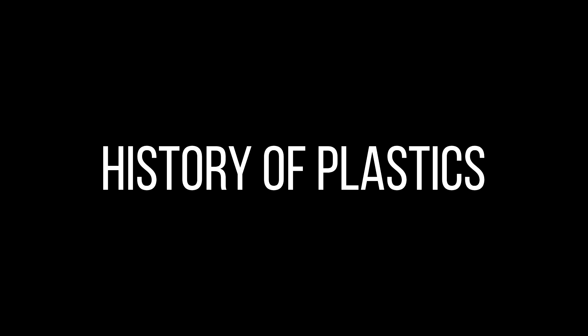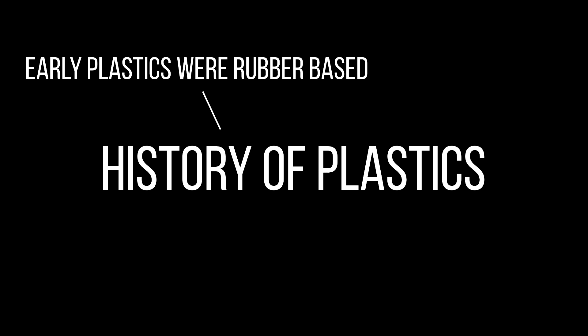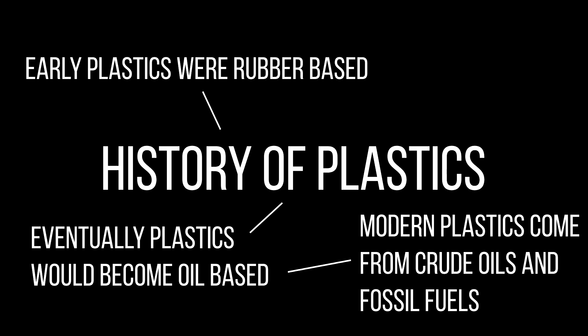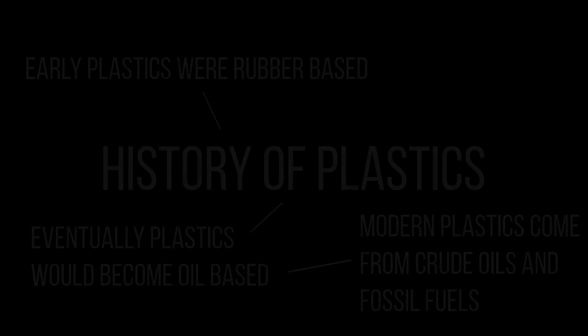Early plastics, such as polyvinyl chloride, were naturally sourced from tree saps and were rubber-based, before becoming more oil-based towards the tail end of the 19th century and throughout the early 20th century. Modern plastics come mainly from crude oils and fossil fuels. The development of plastics would accelerate during the Second World War, as armies needed lighter and more flexible materials, such as nylon and bakelite.